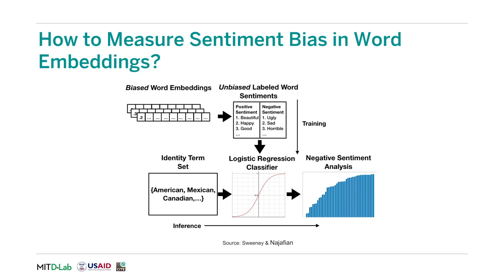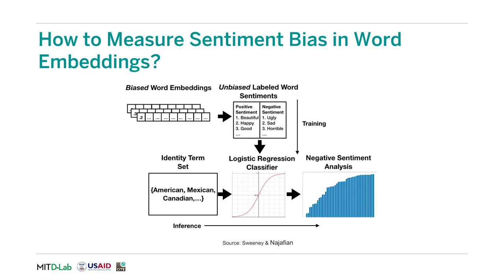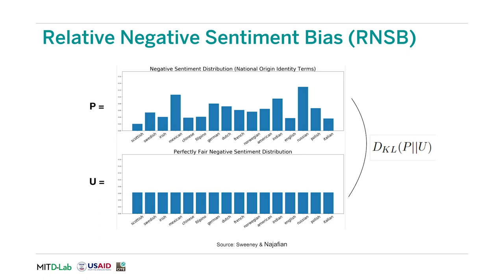This is concerning given that word embeddings could be used in language processing applications devoted to predicting whether someone should get a certain job. However, it is difficult to quantify bias just based on vector space analogies. In this work, researchers Sweeney and Najafian develop a system to measure sentiment bias in word embeddings as a specific number. They take biased word embeddings, use them to initialize an unbiased labeled sentiment dataset, train a logistic regression classifier on this dataset, and predict negative sentiment for a set of identity terms describing demographics from different national origins. They analyze the negative sentiment for each identity term and predict a score describing the bias in word embeddings.